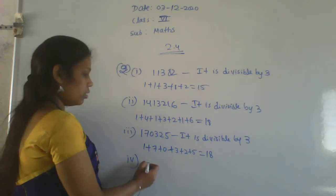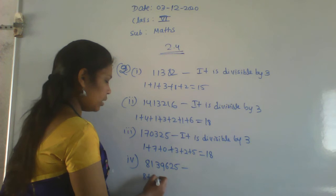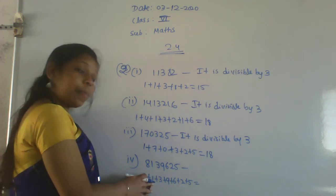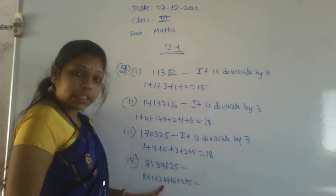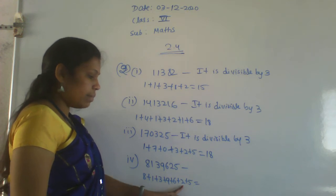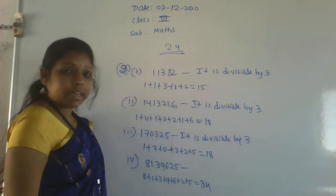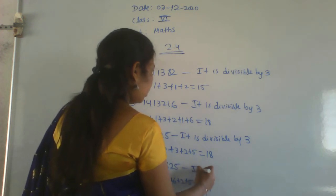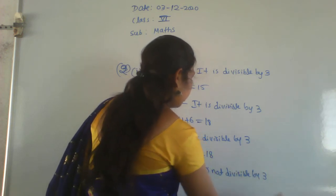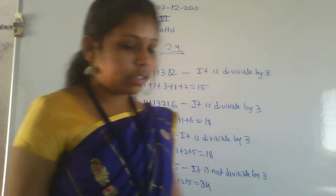Fourth problem is 8139625. Calculate: 8+1+3+9+6+2+5. That is 8+1=9, 9+3=12, 12+9=21, 21+6=27, 27+2=29, 29+5=34. Whether 34 is divisible by 3? No. So it is not divisible by 3.